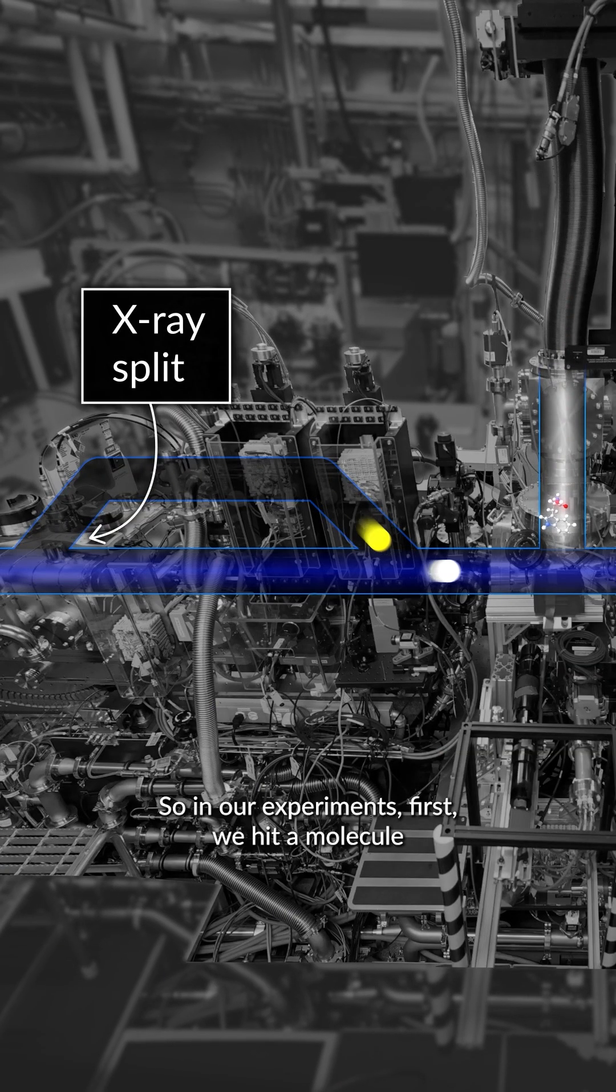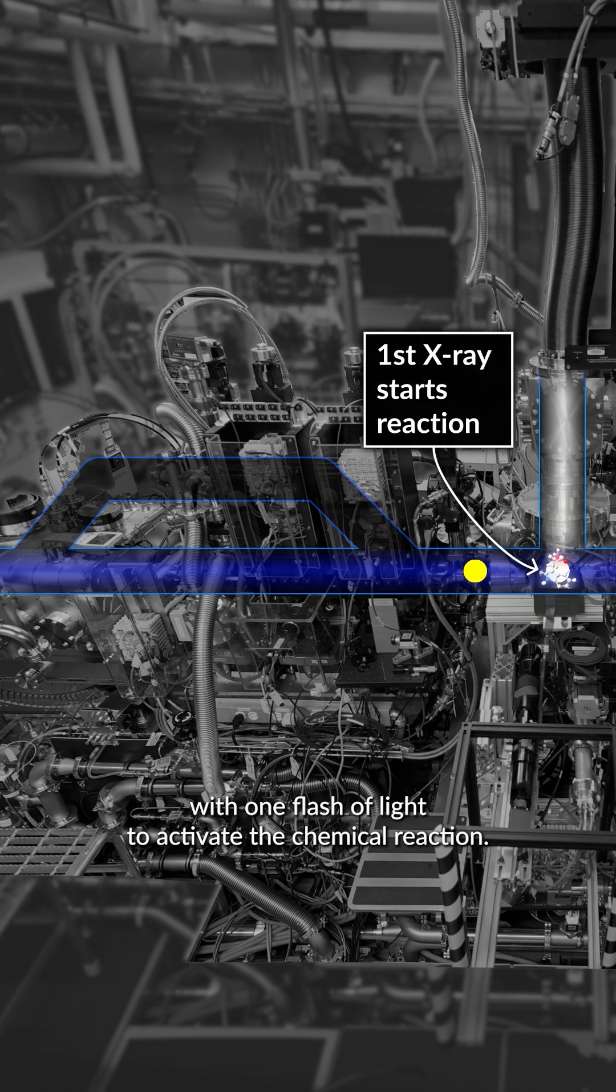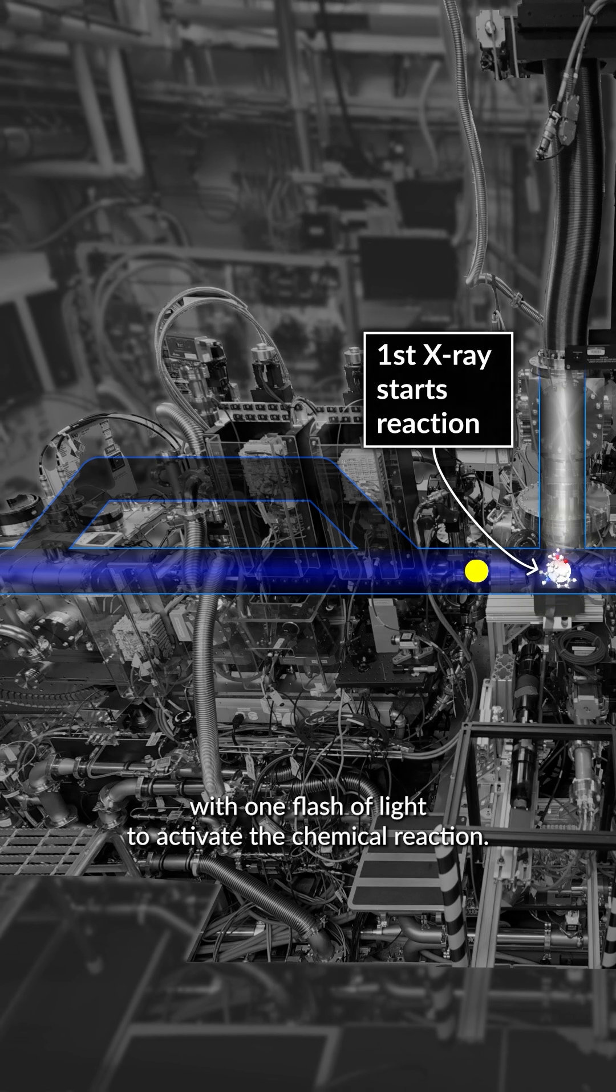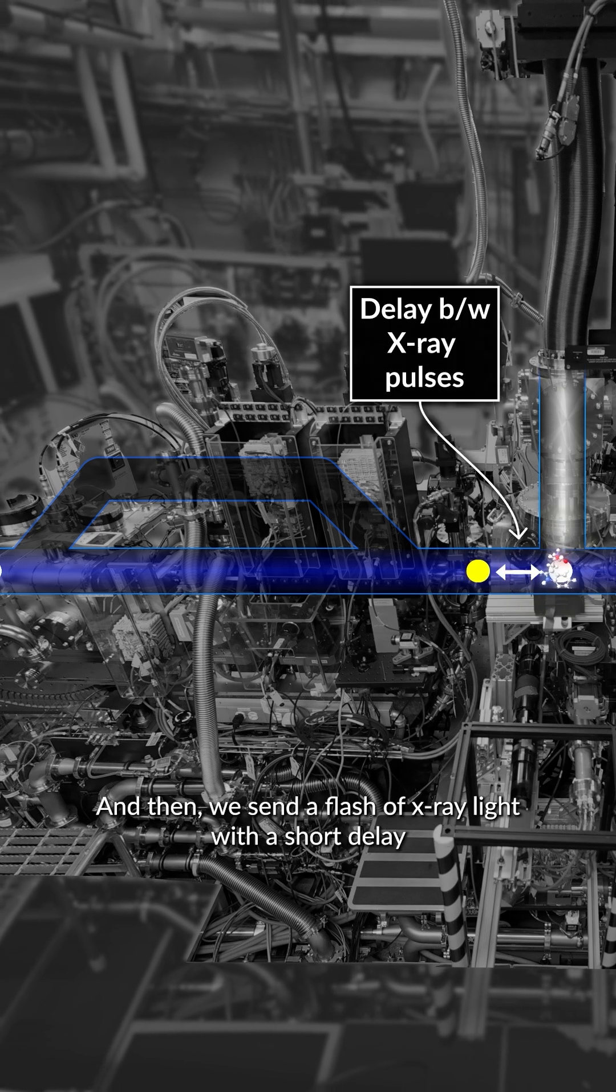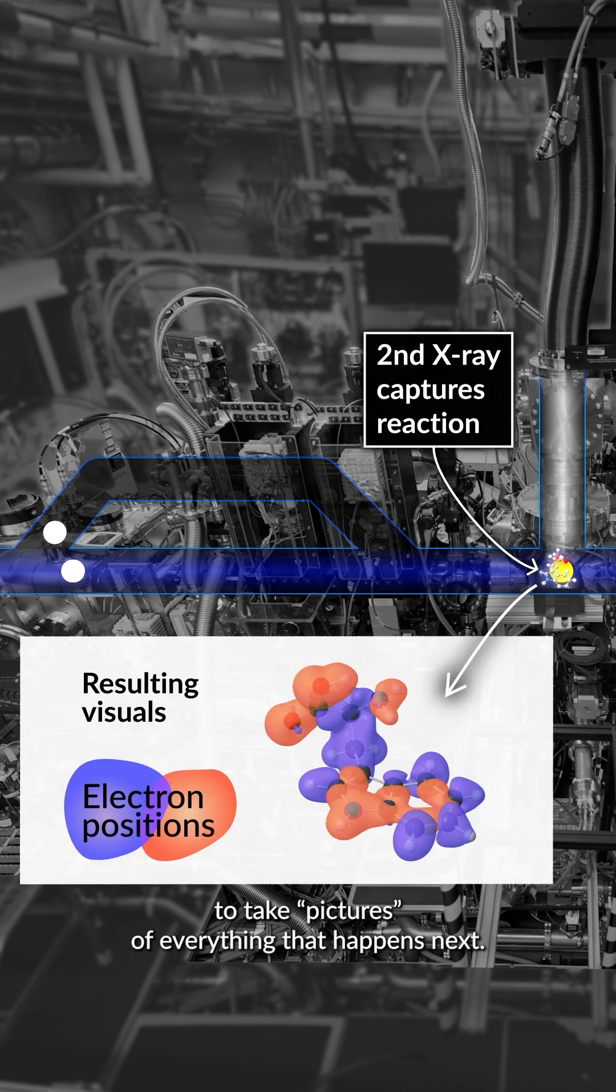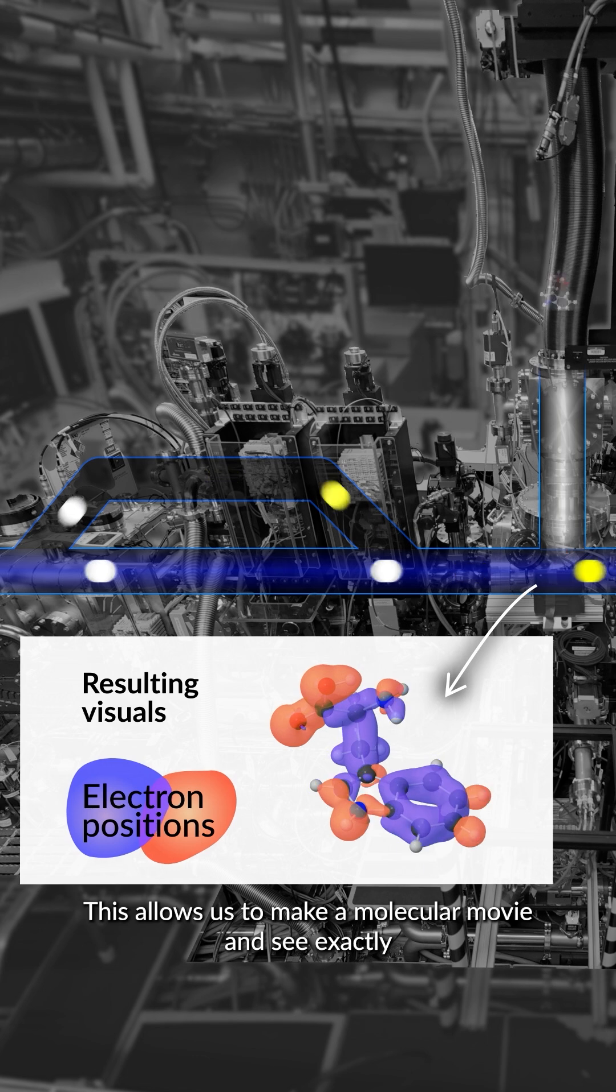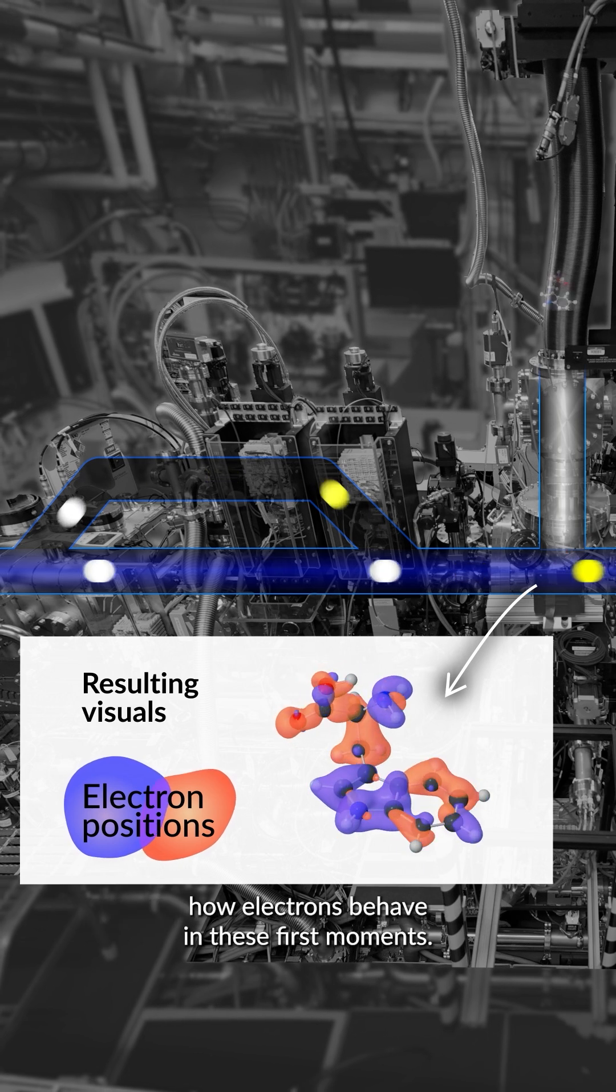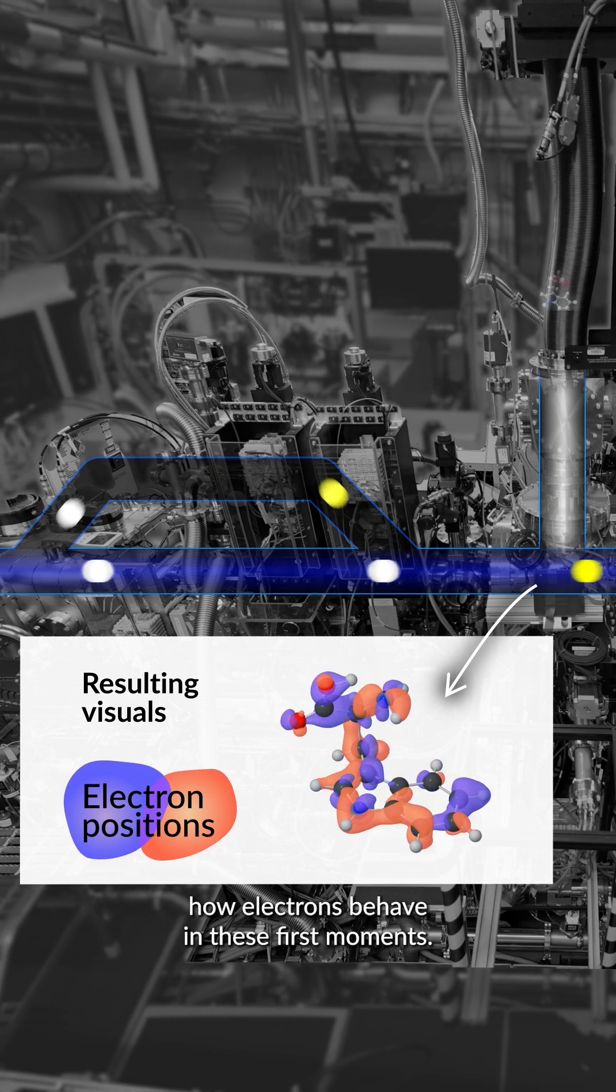So in our experiment, first we heat the molecule with one flash of light to activate the chemical reaction, and then we send a flash of X-ray light with a very short delay to take pictures of everything that happens next. This allows us to make a molecular movie and see exactly how electrons behave in this first moment.